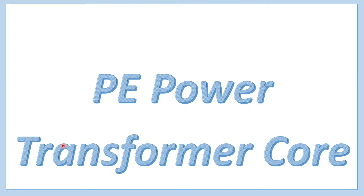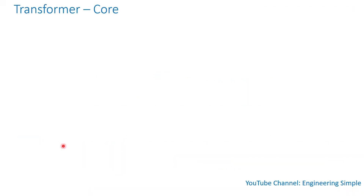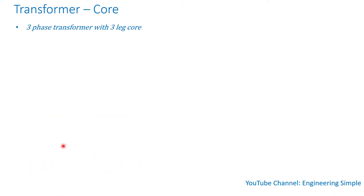Hello and welcome to Engineering Simple. In this video I'll talk about transformer core. The transformer's heart is the core and coil, and in the coil the core is mainly there to maintain the flux so it does not leak out. Let's assume we have a three-phase transformer with a three-leg core.